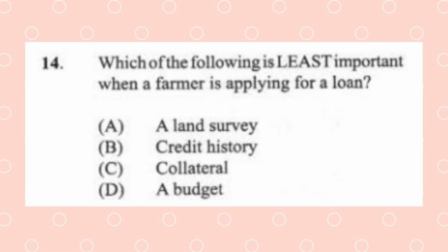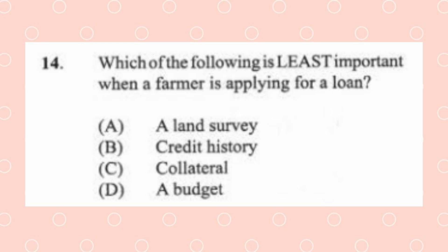Question 14: Which of the following is least important when a farmer is applying for a loan? (a) a land survey, (b) credit history, (c) collateral, (d) a budget. The best answer is D, a budget. For secured loans, a collateral is used — if land is used as collateral, the value of the land determines the borrowing amount, requiring a valuation and survey report. A budget is not needed initially. For unsecured loans, no collateral, survey, or valuation report is needed.